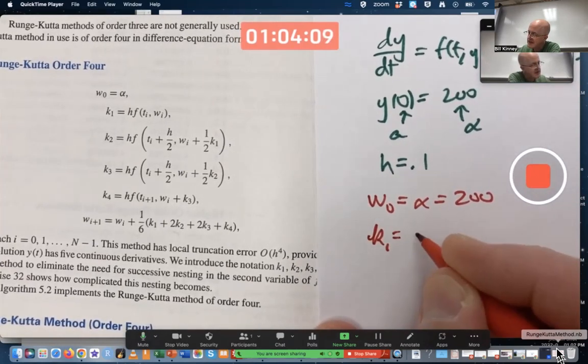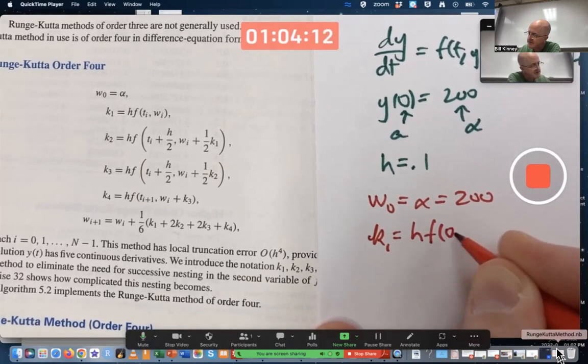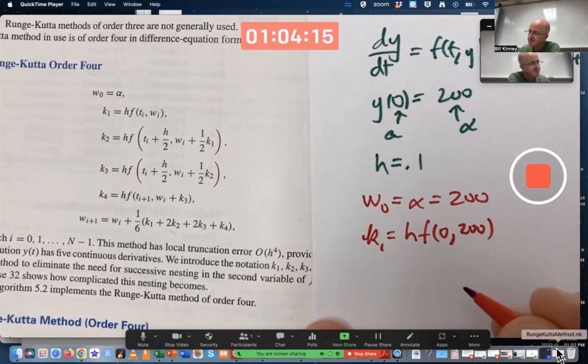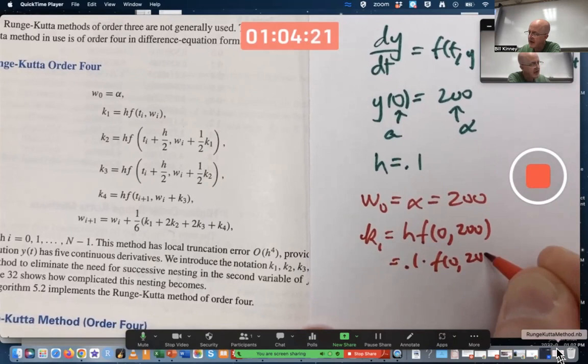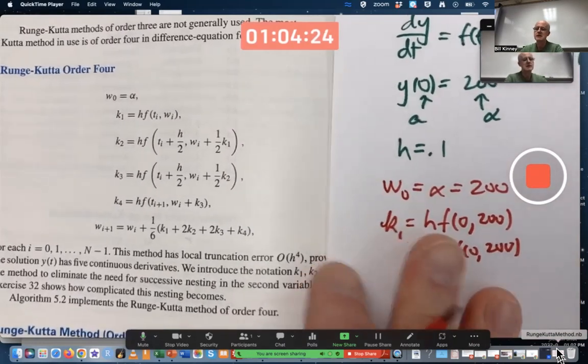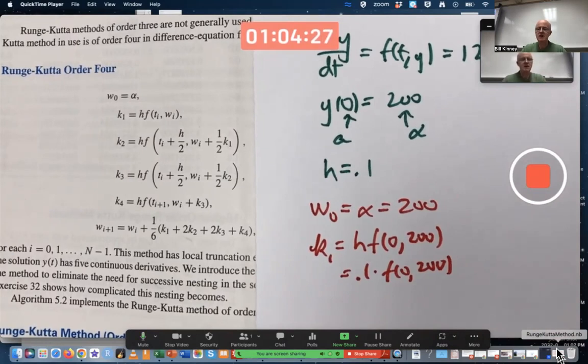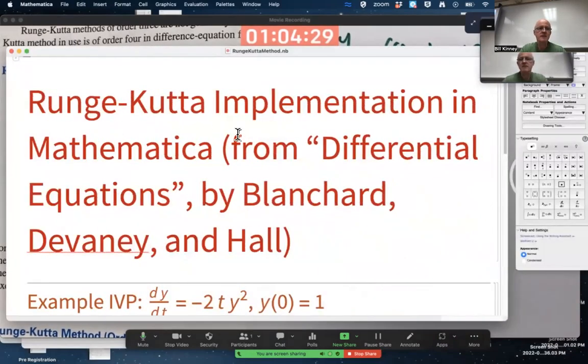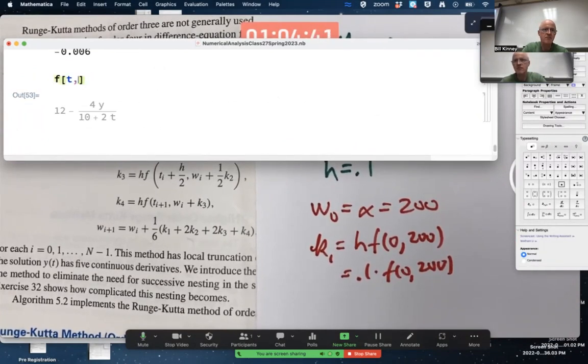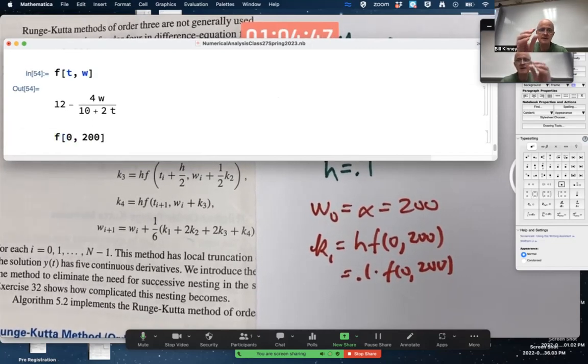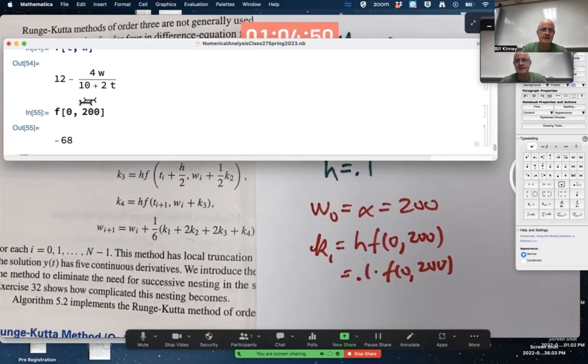K1 evidently should be H times F of (0,200). So that's 0.1 times F of (0,200). We'll have to use Mathematica or calculator here. Since I've got the function plugged into Mathematica, that'll be a bit more convenient. Again, the function is F of (T,Y) or F of (T,W) if you prefer. F of (0,200), that's the slope in the slope field at the initial condition. It's negative 68. Multiply it by 0.1, you get negative 6.8.